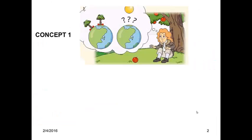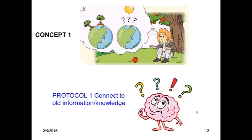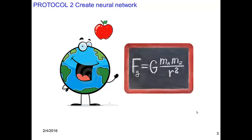For example, to deliver a concept, step one requires review of its prerequisites. Connection to old information will help make learning easier. In the next step, a central idea of the concept will be presented. This may create a possible neural connection in the brain.